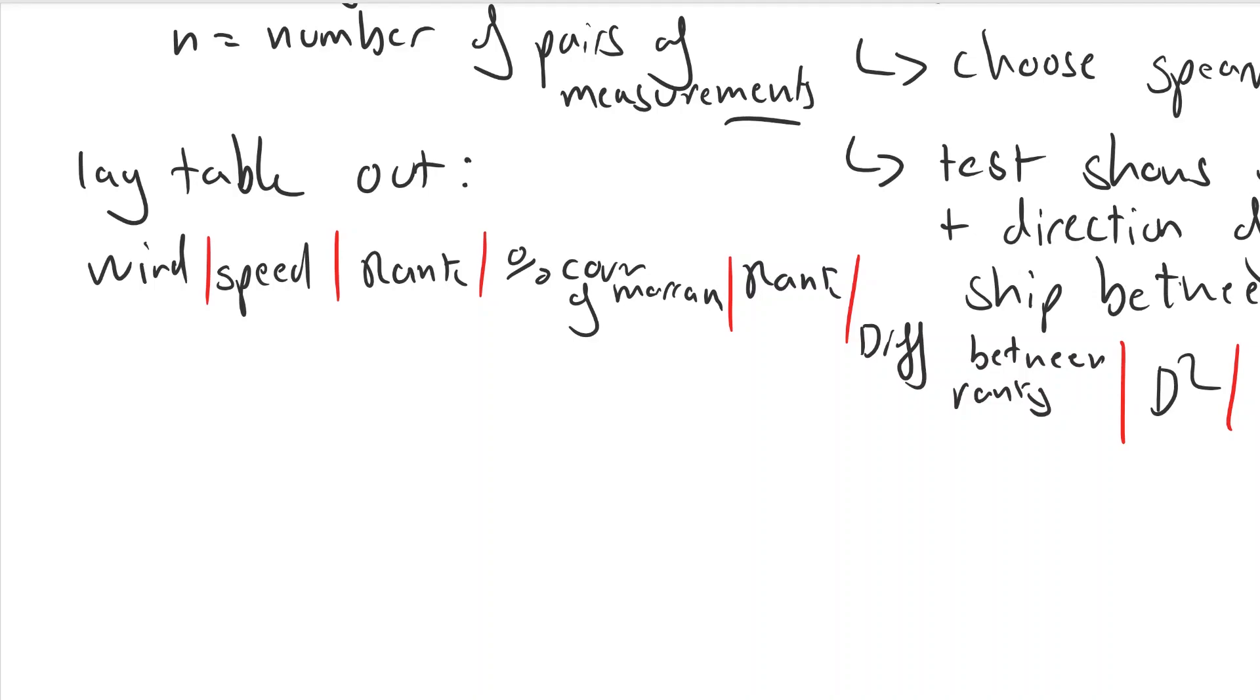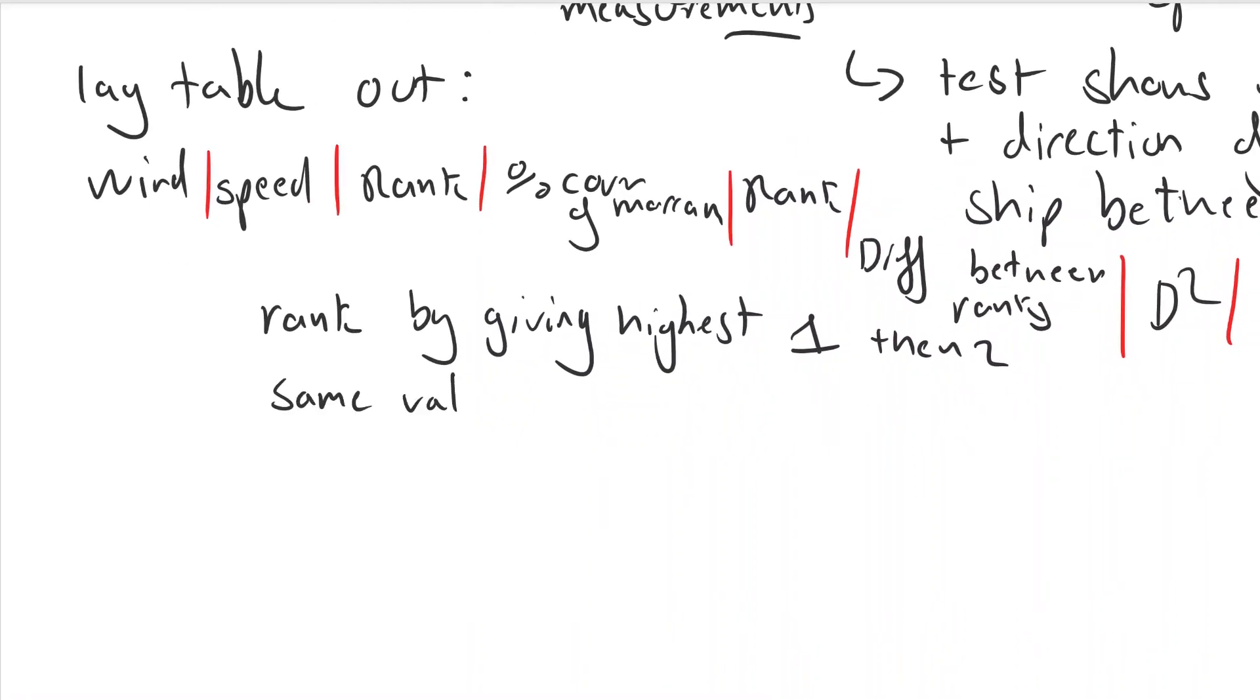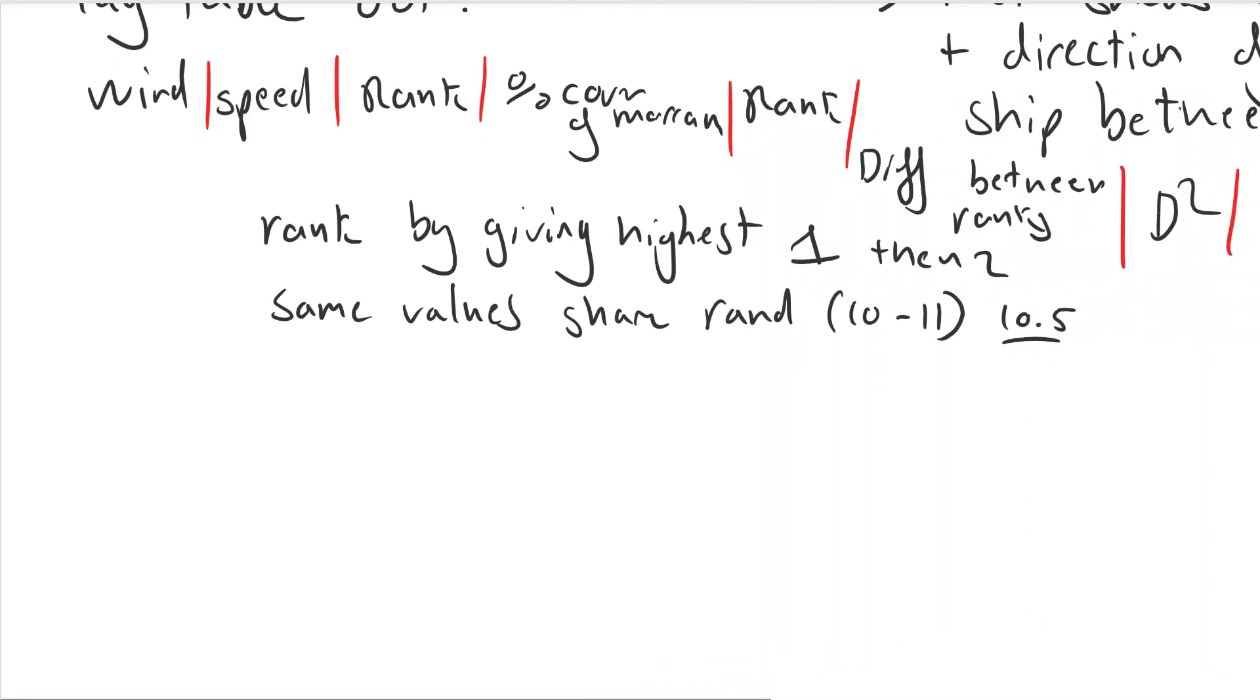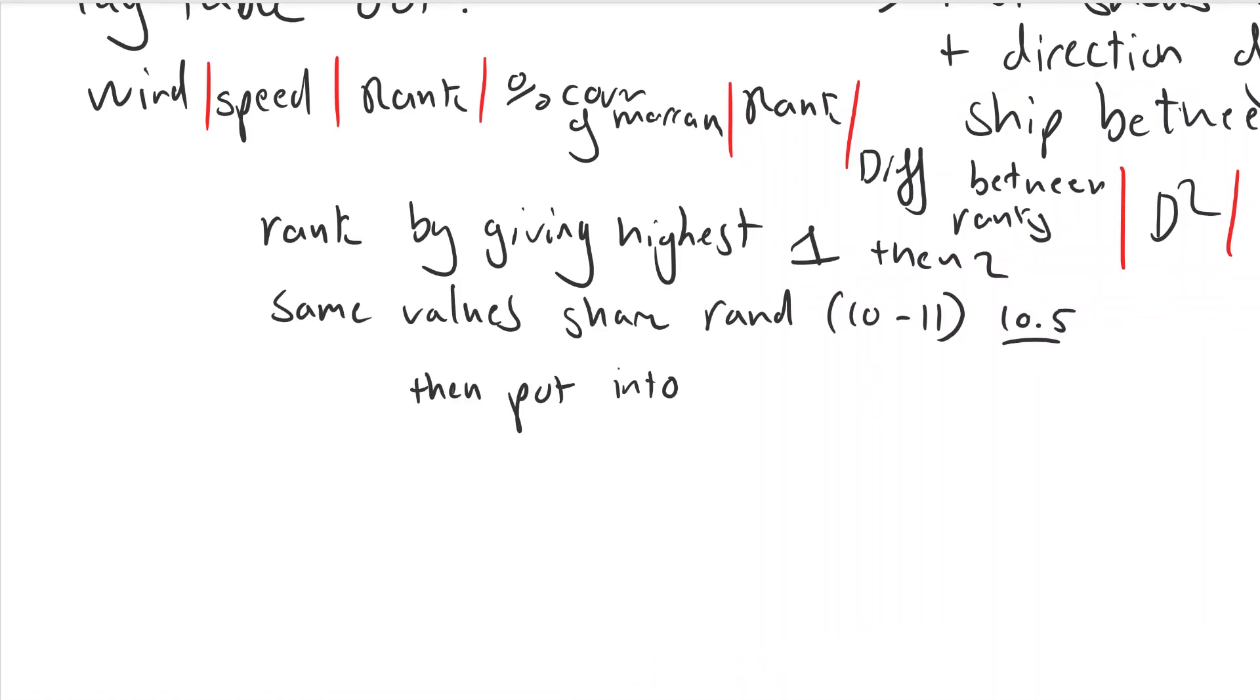We rank wind speed by giving the highest value of one, the second highest of two and if they have the same values then you share rank ten eleven so they both have ten point five for example. Then you do the same for the marram grass, find the difference between them, calculate d squared and then put into equation.